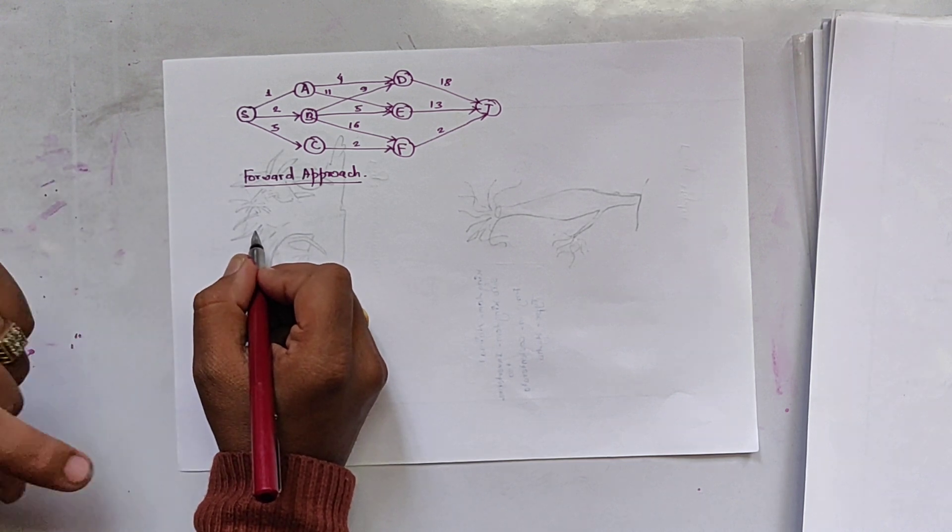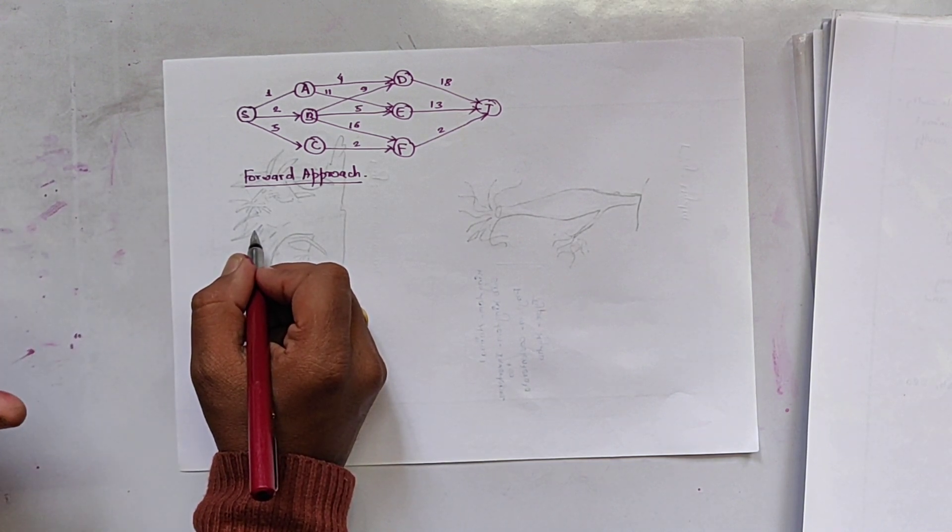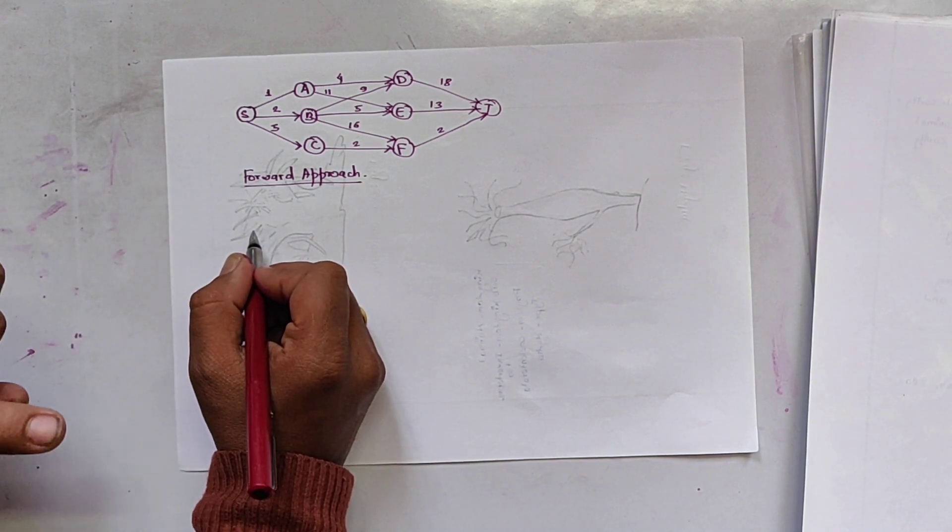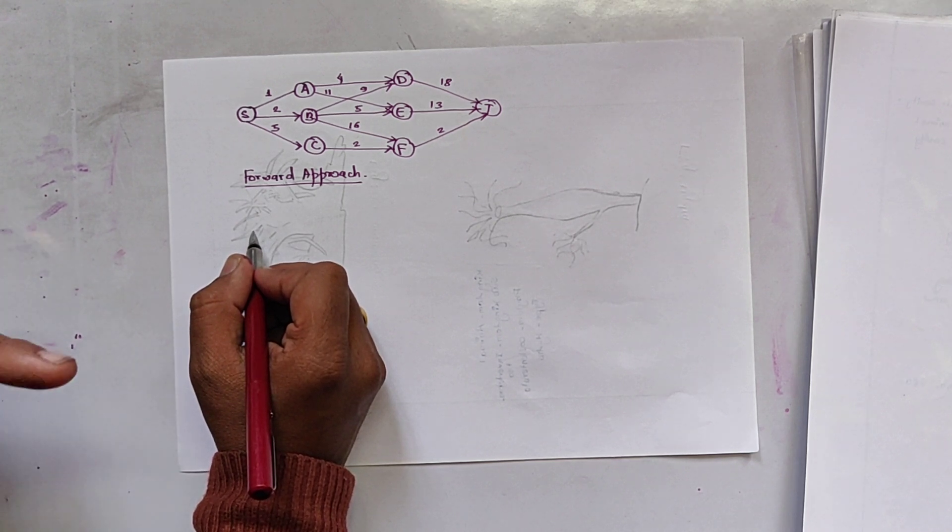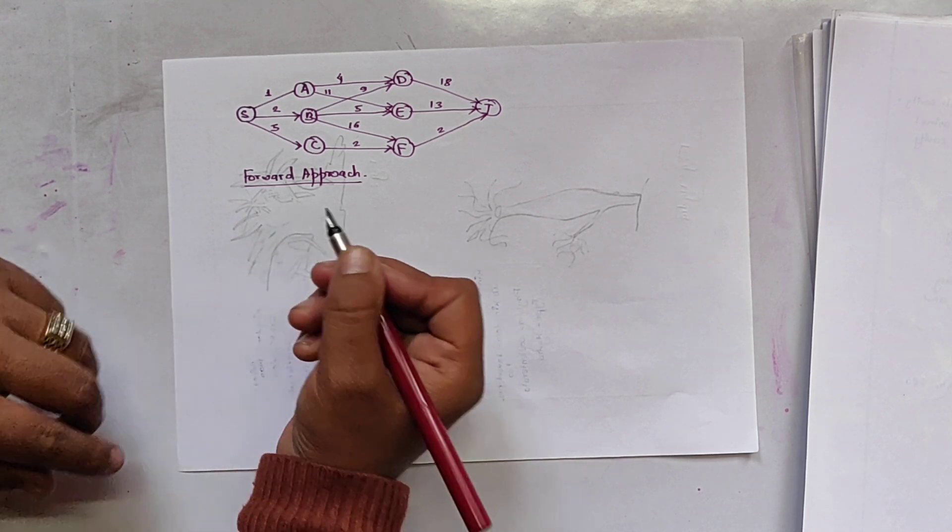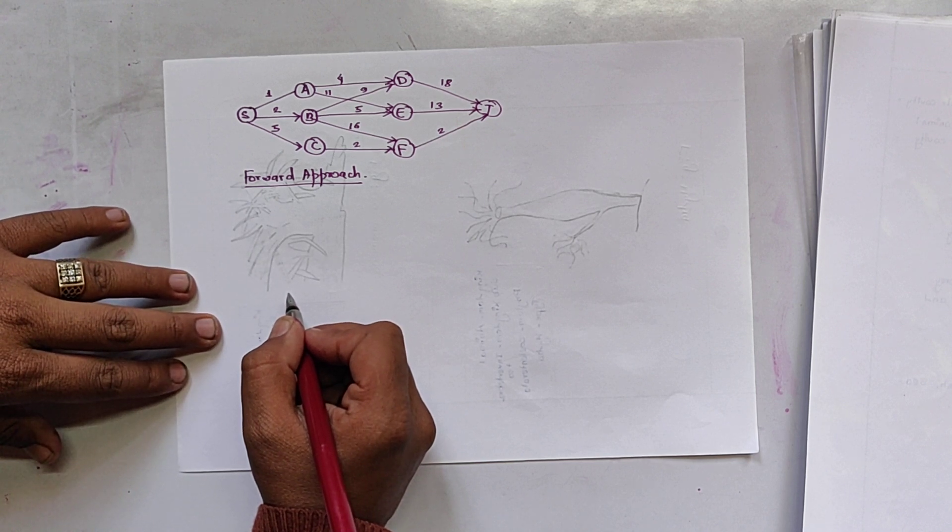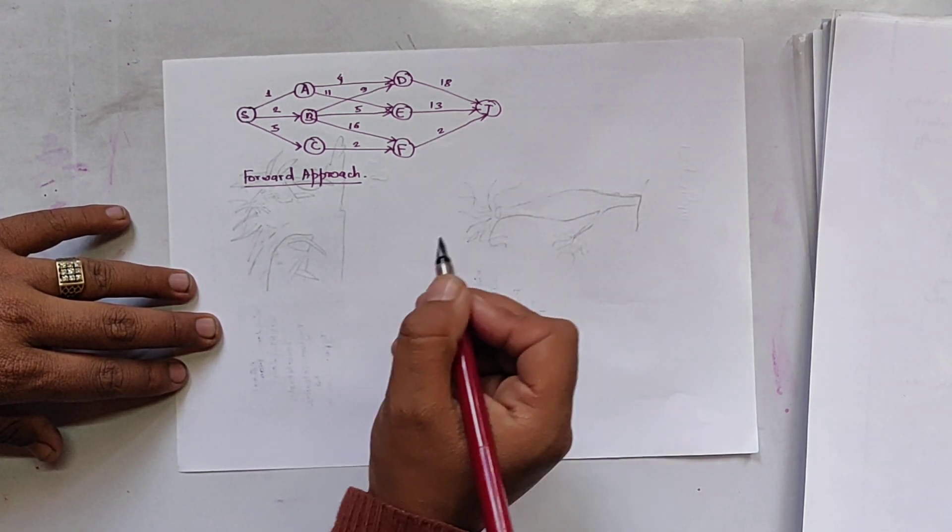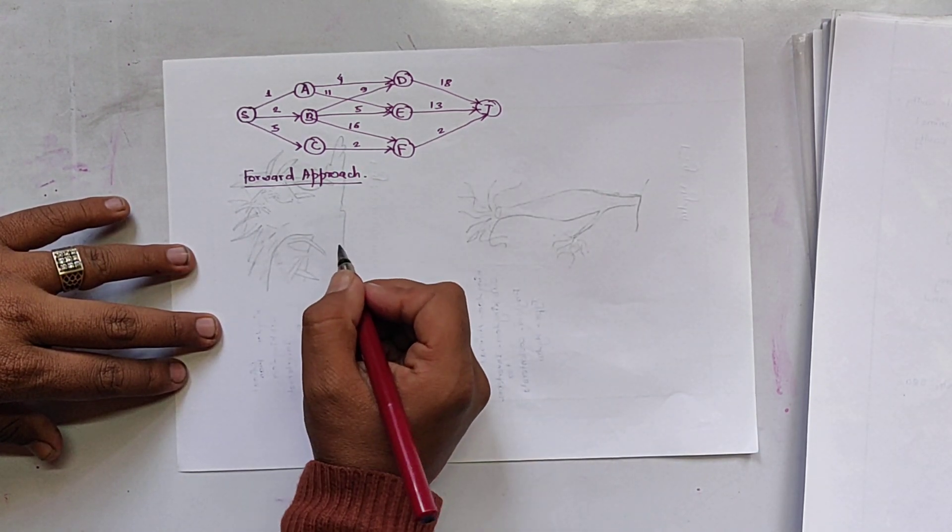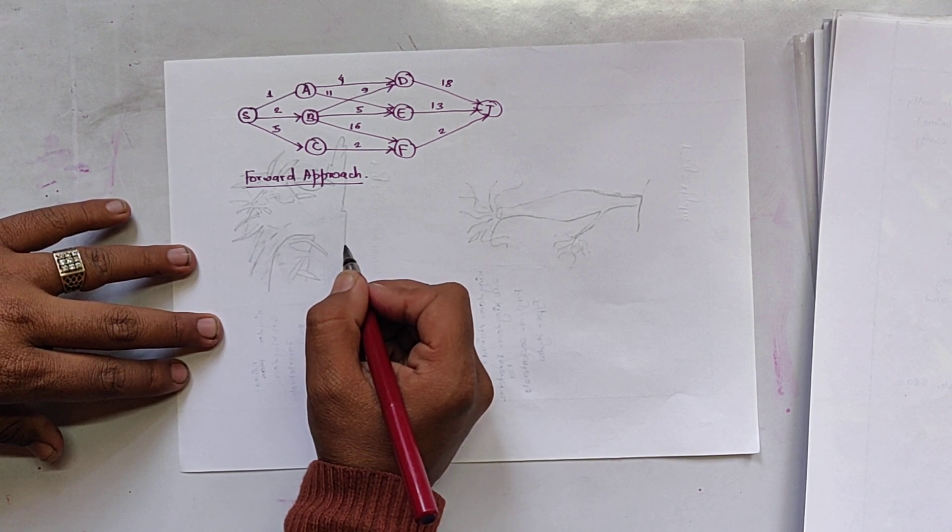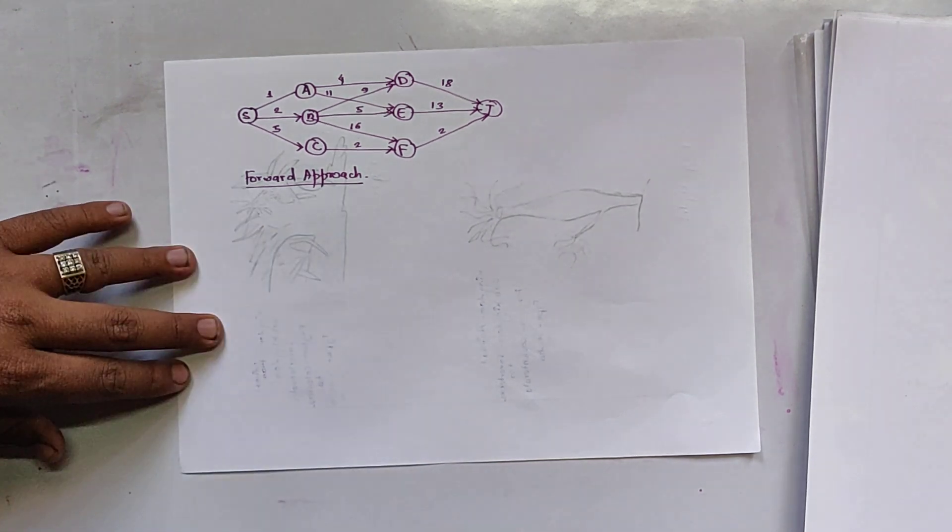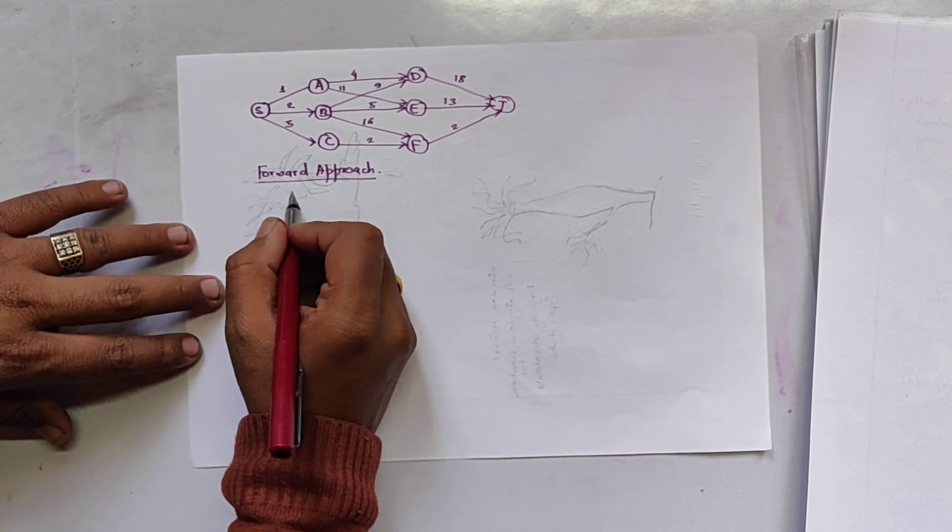In forward approach, we expand from source node and we have to substitute the value after finding the value of the path. That means we substitute backwardly. So it is called backward reasoning.